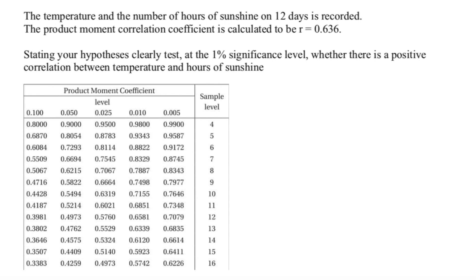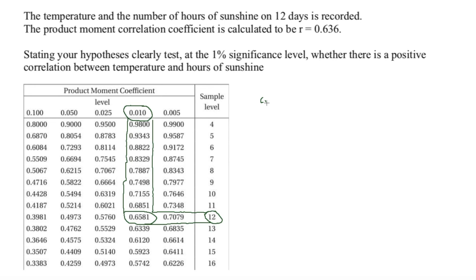To find the critical value, we look at the 1% significance level column in the table. The columns represent 10%, 5%, 2.5%, and 0.05%. With 12 days of data, we read across from n equals 12 to meet the 1% column, giving us a critical value of 0.6581.